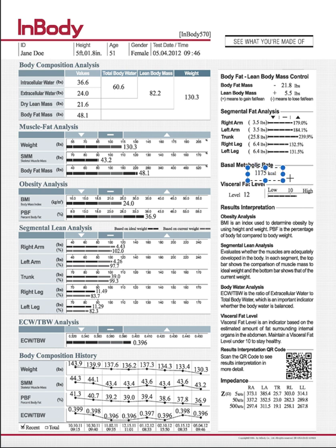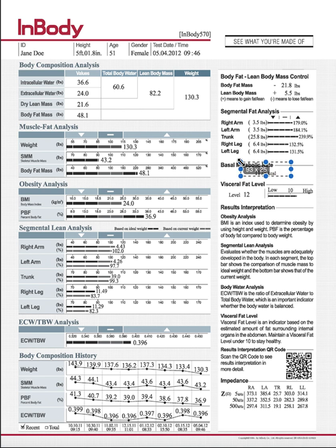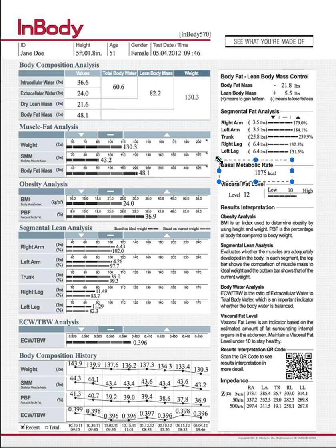Your basal metabolic rate is how many calories your body needs to function and be perfectly healthy. If you laid in bed all day, based on your weight, body fat mass, and muscle mass, that is how many calories your body needs to function normally — meaning your organs are working, your heart is beating properly, and your lungs are working.